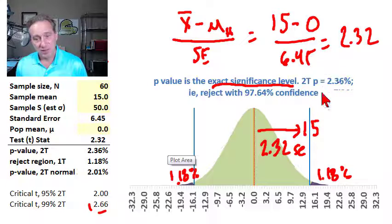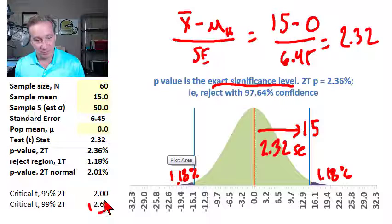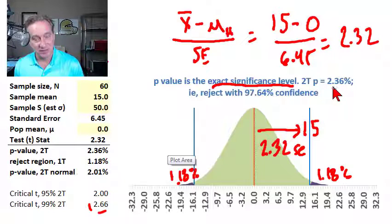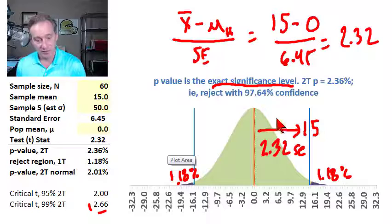And so, but the p-value is really better than either of these, this classic approach of selecting the confidence, because it gives us the exact significance level. It tells us that,